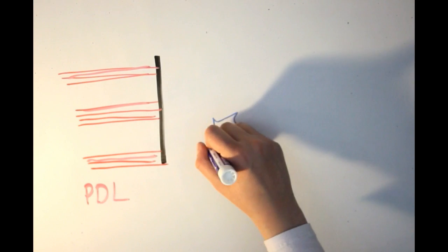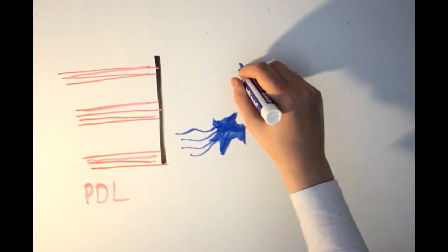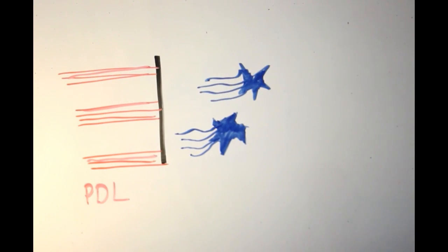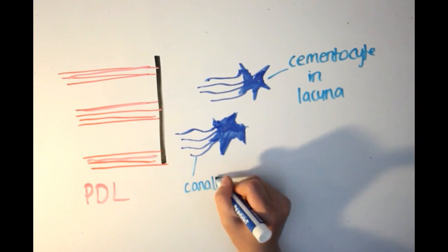Cementocytes have cytoplasmic processes that extend toward the periodontal ligaments and absorb nutrients. They're found in lacunae with their cytoplasmic processes extending in small canals called canaliculi.